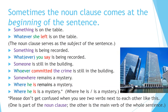Sometimes the noun clause comes at the beginning of the sentence. For example: 'Something is on the table.' 'Whatever she left is on the table.' Again, we follow the pattern — extra word, subject, verb: 'whatever,' 'she,' 'left' — 'is on the table.' The noun clause serves as the subject of the sentence. Let's look at some more examples.